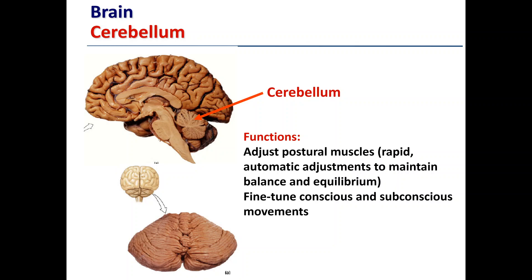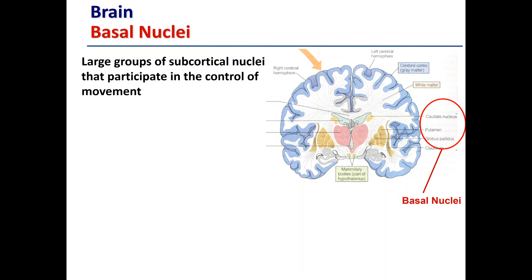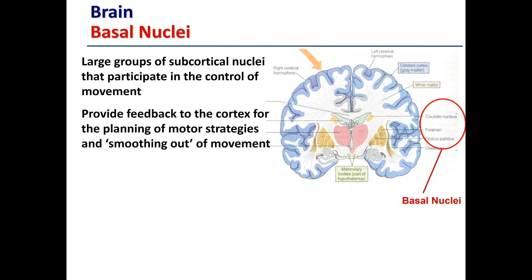The second key function of the cerebellum is fine-tuning conscious and subconscious movements. A complex movement like running involves contraction of many different muscles in a specific order. If you consciously thought about each contraction in sequence, movement would be very clunky and robotic. When you actually run, the movement is very smooth — and that's facilitated through the cerebellum. The basal nuclei are a large group of subcortical nuclei that participate in the control of movement, providing feedback to the cortex for motor planning and also contributing to smoothing out movement.